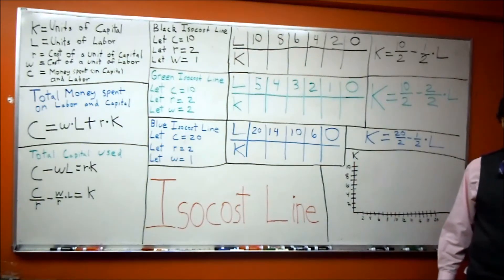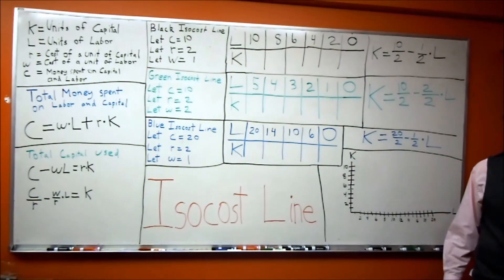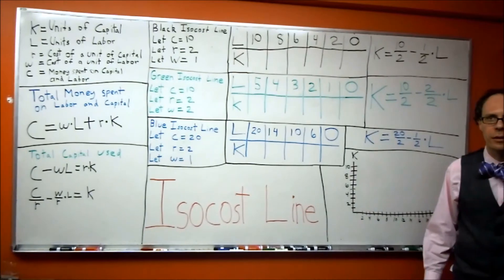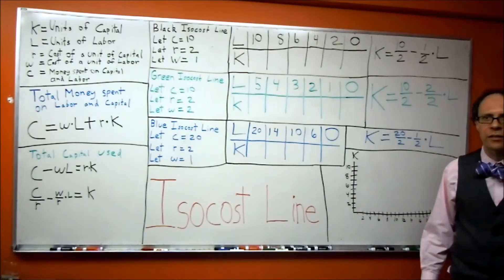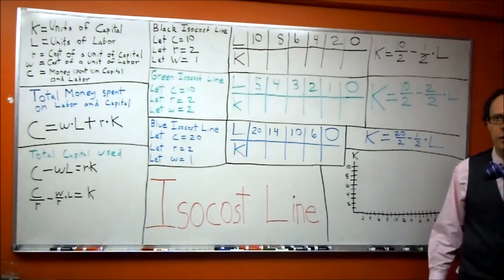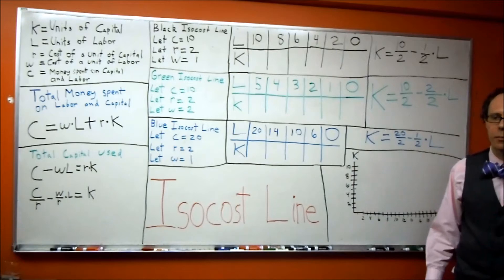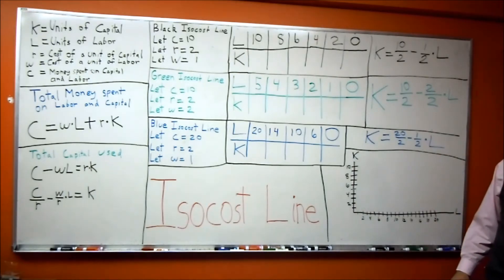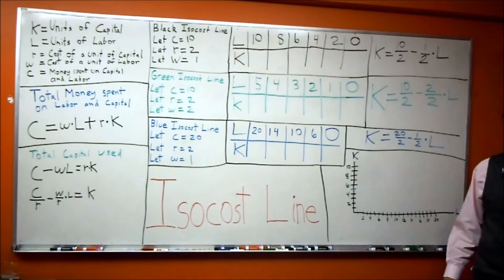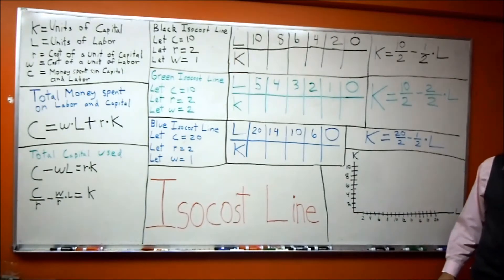We are going to learn how to draw an isocost line. An isocost line tracks different combinations of inputs, if used, that cost the same amount of money. In this case, our inputs are going to be capital and labor.